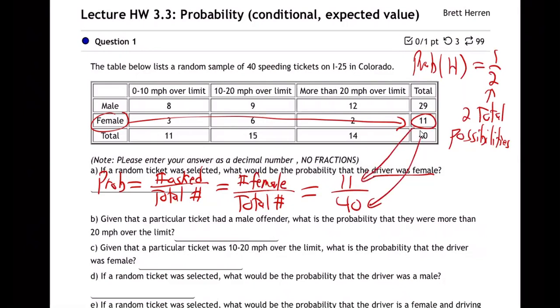They said no fractions — they want a decimal. So I'll divide 11 by 40. On my calculator I'm getting 0.275. So that's the probability that if you grab somebody at random from this crowd, you're going to get a female. There's a 27.5% chance, basically. Most of the speeders are males.